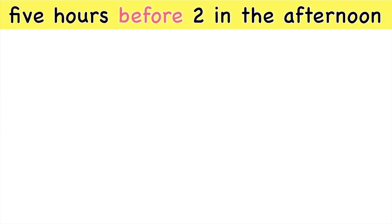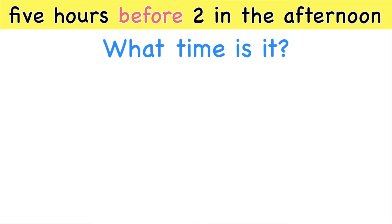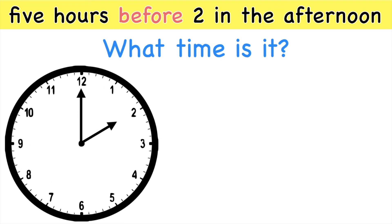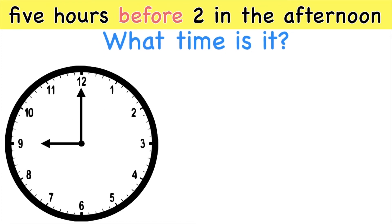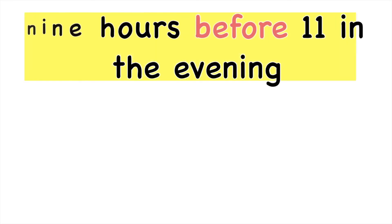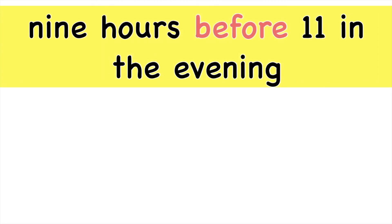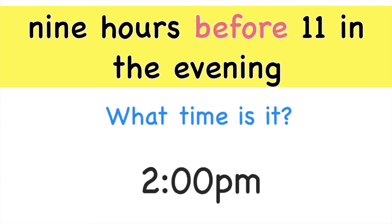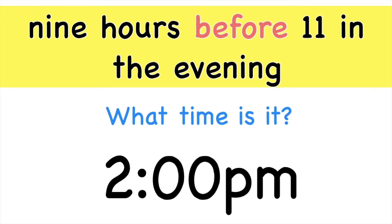How about this one? 5 hours before 2 in the afternoon. What time is it? This is your 2 o'clock. Let's count backwards 5 hours: 1, 2, 3, 4, 5. What time is it? It's 9 o'clock in the morning. How about this one? 9 hours before 11 in the evening. What time is it? Good job! It's 2 o'clock p.m.